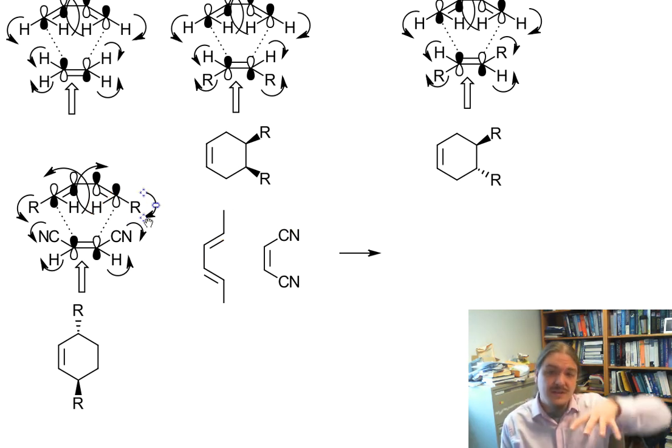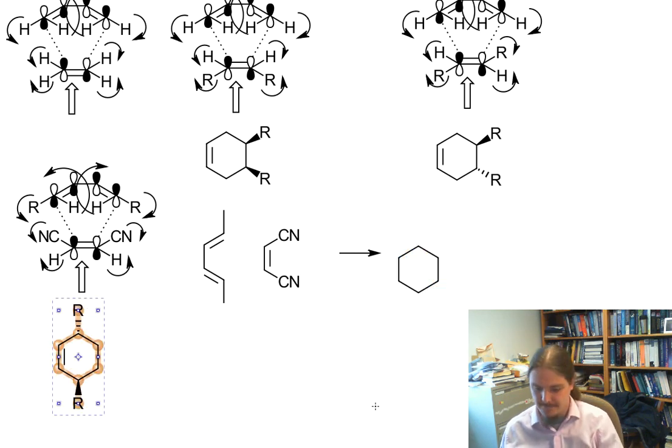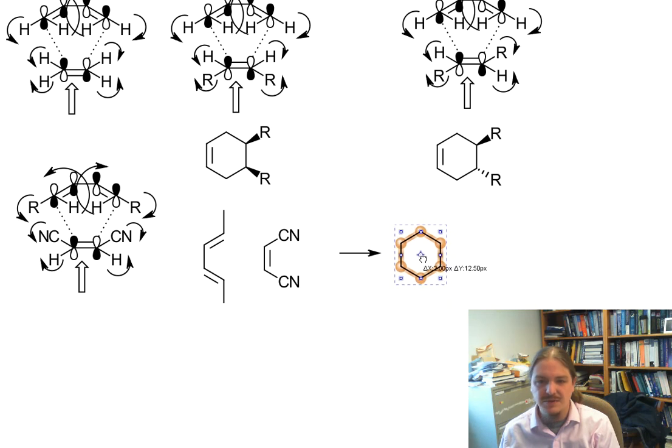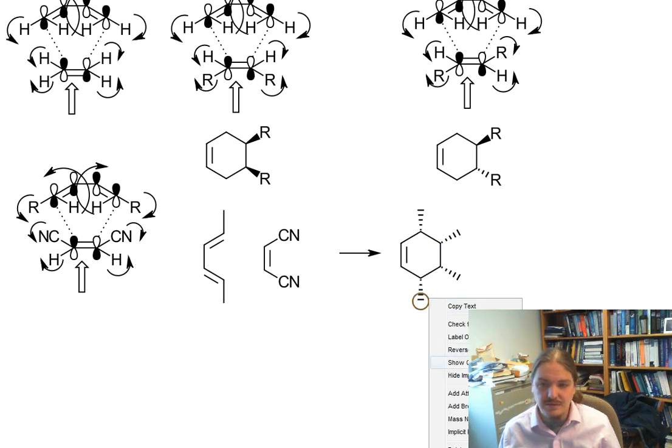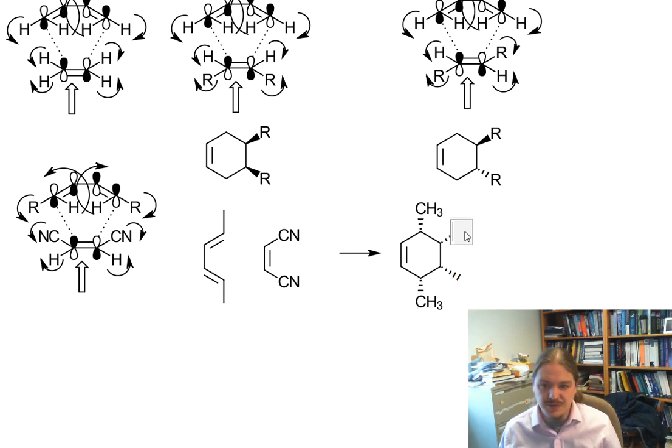When all of this starts to come together, it looks like my R groups are rotating downward and my nitriles are rotating downward. So the stereochemical outcome is going to look like this. These are actually all going to end up facing the same direction. My R groups are actually methyls, and my other groups are nitriles.